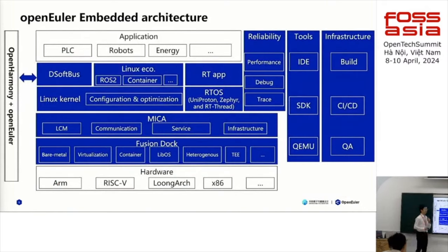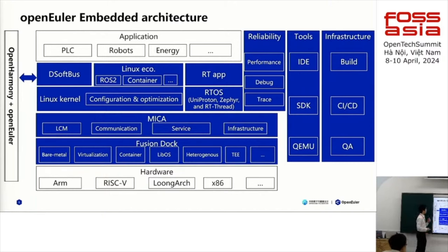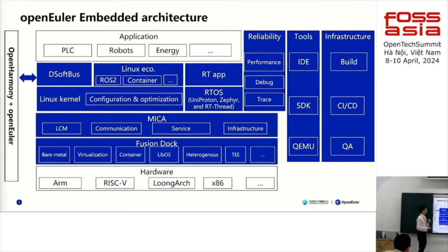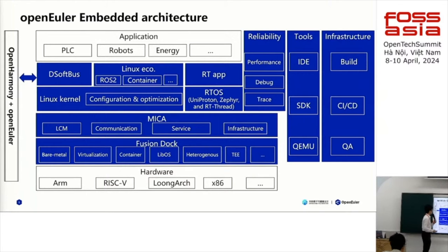Let's take a deeper look at OpenEuler Embedded — the blue part represents the scope of OpenEuler Embedded. For hardware, we can support more diversified hardware than cloud and server scenarios. For applications, we mainly support operational technology applications, and we'd like to attract users and vendors to build their own applications based on OpenEuler Embedded. At the bottom part, we have the Fusion Dock, a collection of technologies to support multi-OS running, including virtualization, containers, etc. Above that, we have the Mika framework, which is the management framework for lifecycle management for multi-OS.